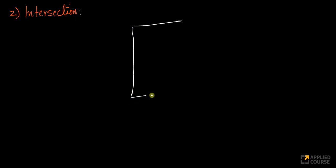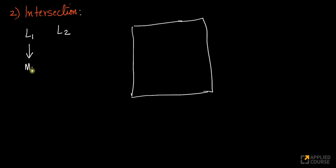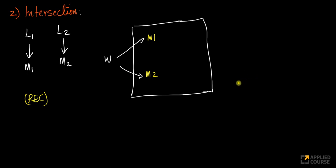Now let's talk about intersection. Let's look at intersection of both recursive and recursively enumerable languages. Suppose I have two languages L1 and L2, with machine M1 for L1 and machine M2 for L2. Using the block diagram approach — given a word, I pass it to two tapes. Let's start with recursive languages first.